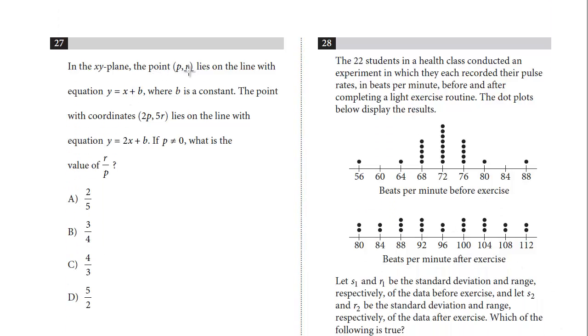In the XY plane, the point (P, R) lies on the line with equation Y equals X plus B, where B is a constant. The point with coordinates (2P, 5R) lies on the line with equation Y equals 2X plus B. If P does not equal 0, what is R over P?